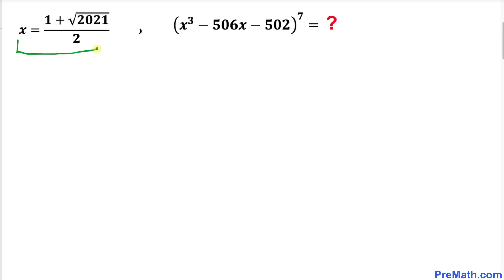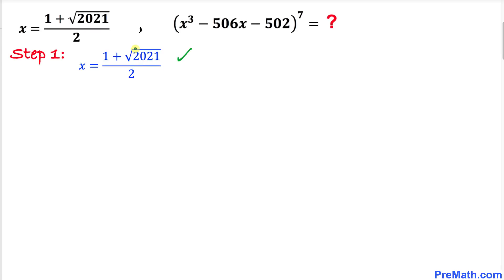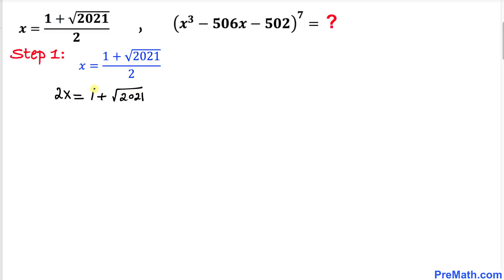Let's focus on our very first equation: x equals 1 plus square root of 2021 divided by 2. Let's isolate the radical part. We get rid of the 2 in the denominator by multiplying both sides by 2, giving us 2x equals 1 plus square root of 2021. Moving the 1 over, we get 2x minus 1 equals square root of 2021. Now let's square both sides to undo the square root.